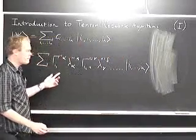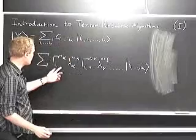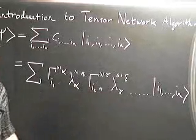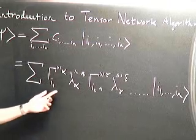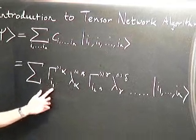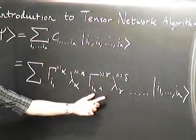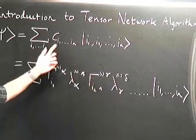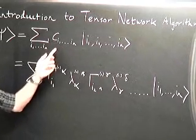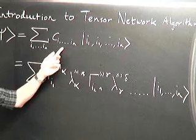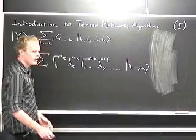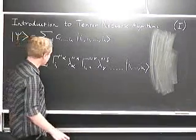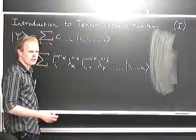We could actually evaluate this sum — sum over the repeated indices alpha, beta, gamma, delta, and so on. Providing we've chosen these tensors correctly, we could recover the original tensor C. This is already a tensor network ansatz. In fact, it's a very popular one known as the matrix product state.